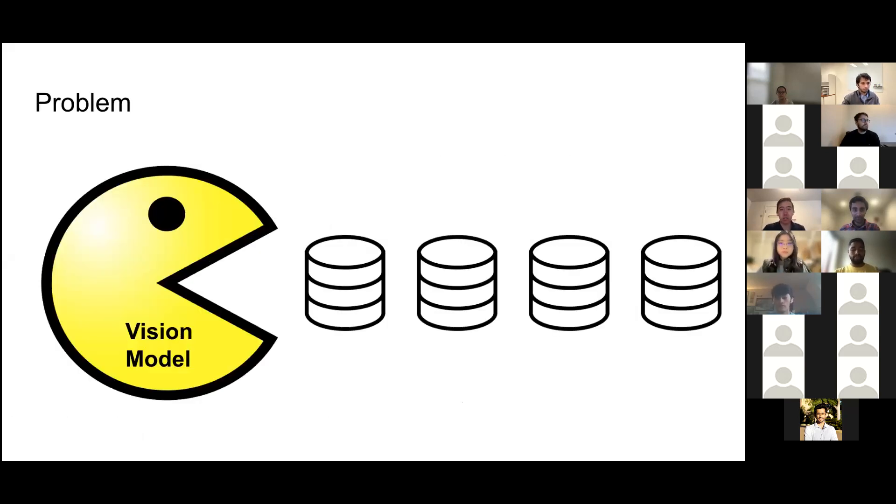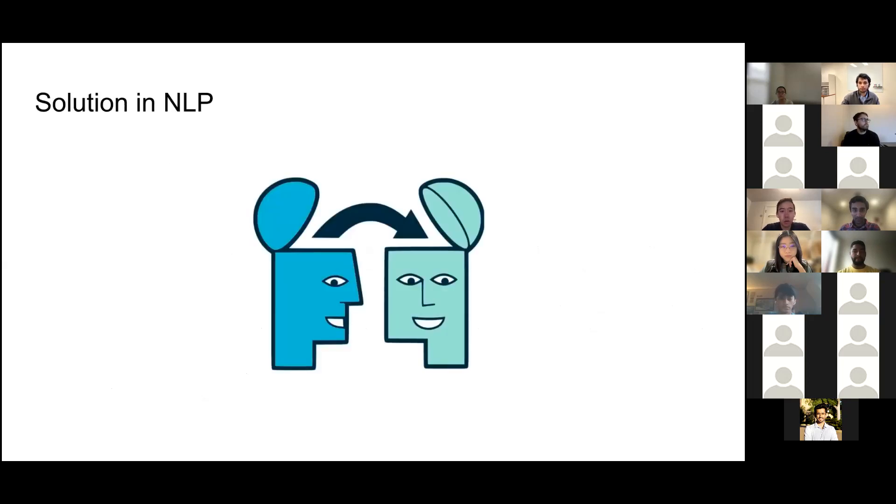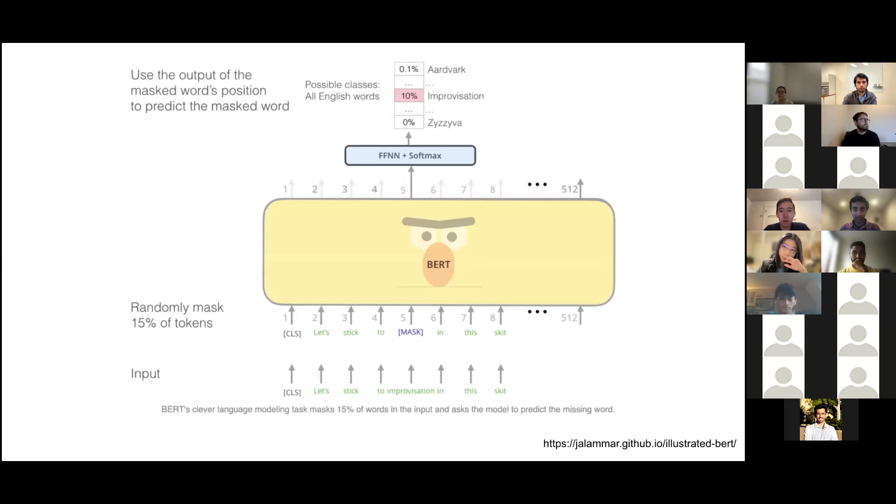So the problem that the authors are trying to tackle is that with large architecture and hardware advancements, vision models today can easily overfit large amounts of images and demand even more data, which is often publicly inaccessible. The field of NLP has a solution to this, particularly in self-supervised pre-training. One such example is using masked autoencoding, as is done in BERT. For example, with the string 'let's stick to improvisation in this skit,' what you do in BERT is randomly mask 15% of the tokens. In this case, the word improvisation is masked, and the pre-training task is to predict that masked word from all English words. This enables generalizable models.